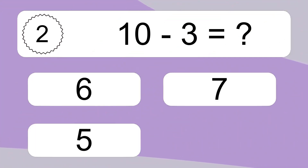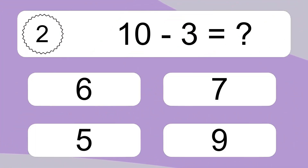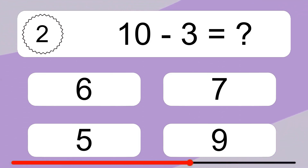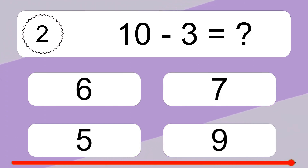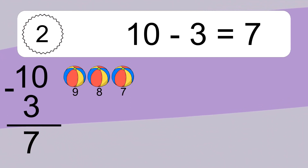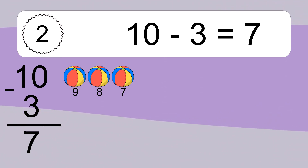10 minus 3 equals what? 10 minus 3 equals 7. Let's count it: 9, 8, 7.